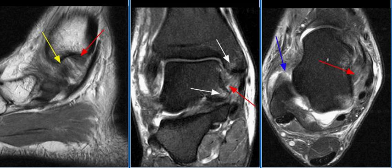The posterior tibiotalar ligament is the strongest part, and the tibiocalcaneal and tibionavicular are the weakest parts of the deltoid ligament complex.